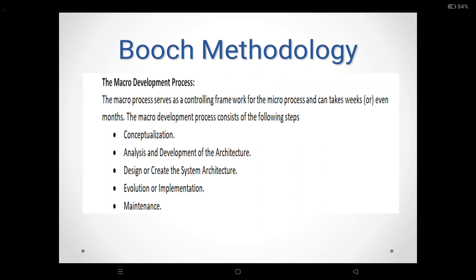The BOOCH methodology consists of two different development processes: the macro development process and the micro development process. The macro process serves as a controlling framework for the micro process. It can take a week or even a month. The primary concern of the macro process is technical management of the system, and the traditional phases of analysis and design are largely preserved.